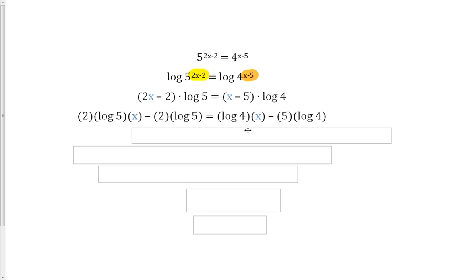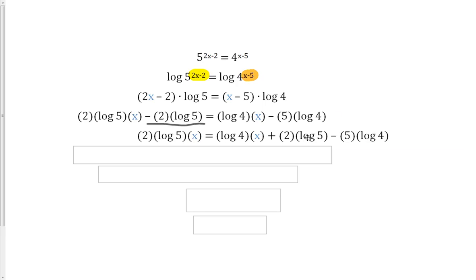Then we want to get our x's on the same side, so we're going to move our constant here. We have our constant term on the left of negative 2 times log 5. We're going to add that to the right side so that we're left with just 2 log 5 times x on the left.